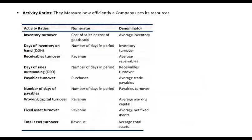Starting with activity ratios. The reason we are covering activity ratios now is that they make use of multiple financial statements — some data from the balance sheet, some from the income statement, and some from the cash flow statement. In activity ratios, there will be some kind of asset in the denominator and some kind of revenue or cost of sales or activity in the numerator.